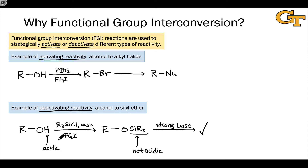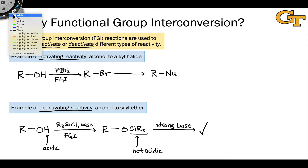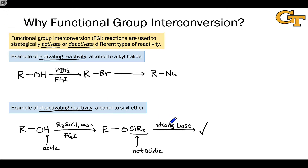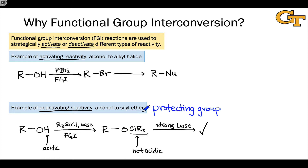This idea of using functional group interconversion to achieve a deactivation of reactivity — or turning off reactivity — is more commonly called a protecting group strategy. We can think of that silyl ether as a group that protects the hydroxyl. The protecting group strategy really shines when we remove this silyl ether group and return it to a hydroxyl after we've accomplished our synthetic goal.